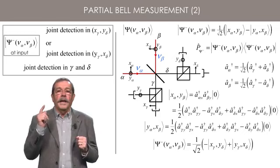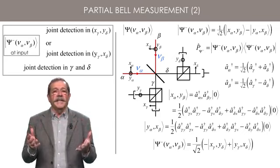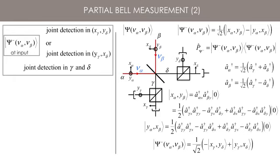It is remarkable that among the four Bell states, it is the only case where there is a joint detection in channels gamma and delta. Indeed,